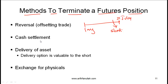Another method is a cash settlement. With cash settlement, you figure out how much you owe the exchange or how much the exchange owes you, and that amount is settled in cash. Another way is the delivery of asset, where the short is responsible for delivering the asset to the long, and the long pays the contractually agreed upon price. Often the short has delivery options — flexibility in which specific item to deliver, where to deliver, or when to deliver. Those options are valuable to the short, as we'll see in the context of treasury bonds later.